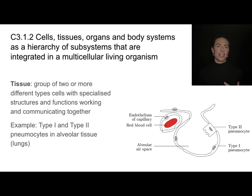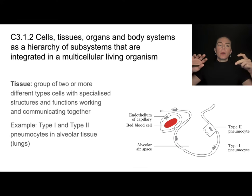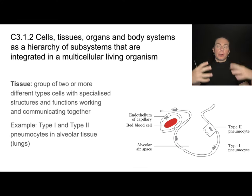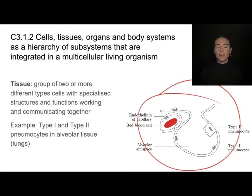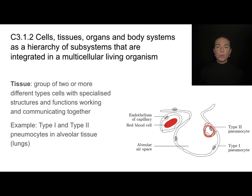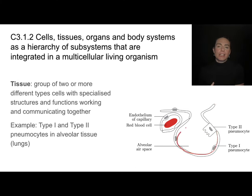We'll work on some formal definitions for these levels of organization. A tissue is a group of two or more different cell types working together for a common purpose — communicating and coordinating together. For example, in the alveolus of the lung, we find type one pneumocytes and type two pneumocytes. Those are two types of cells, but we consider them the same tissue — alveolar tissue — because they're coordinating and working together.